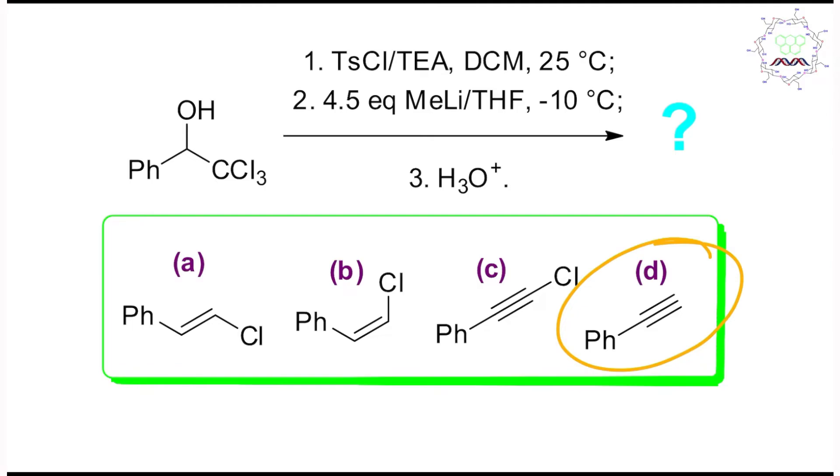If this question appears in your exam, less than 30 seconds, how can you come up to the right answer? I believe it's difficult if you don't know this Corey-Fuchs reaction. I suggest to you, in this case, please go step-wise. In the first step, a simple answer: it will be OTs formation. Now nucleophilic attack by methyl lithium at this center is difficult because here phenyl group one side, one side CCl3, two big groups, not possible.